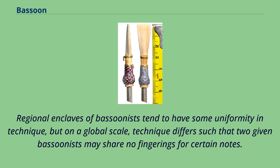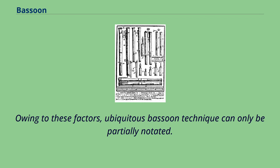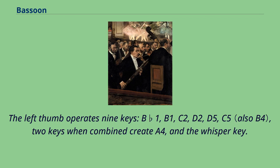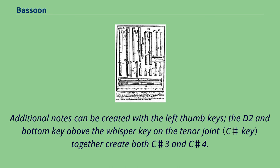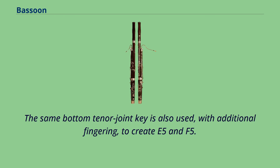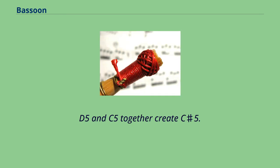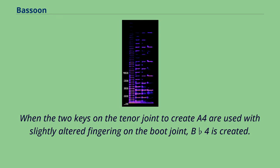The left thumb operates nine keys: Bb1, B1, C2, D2, D5, C5, two keys which when combined create A4, and the whisper key. The whisper key should be held down for notes between and including F2 and G3. Additional notes can be created with the left thumb keys; the D2 and bottom key above the whisper key on the tenor joint together create both C-sharp 3 and C-sharp 4. The right thumb operates four keys. The uppermost key is used to produce Bb2 and Bb3, and may be used in F-sharp 4, C5, D5, F5, and Eb5. The large circular key, otherwise known as the pancake key, is held down for all the lowest notes from E2 down to Bb1, and is also used for muting the sound.